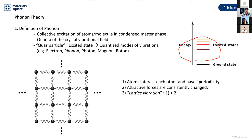You can see in this figure that many atoms interact with each other with some periodicity, and the attractive forces between them change consistently — like springs. Lattice vibration is defined by this periodicity and the consistent changes in attractive forces. This is called lattice vibration.